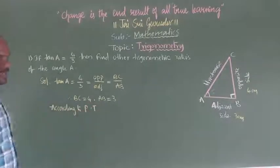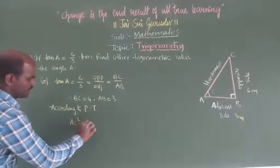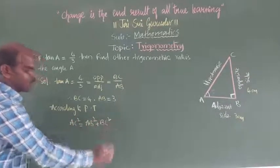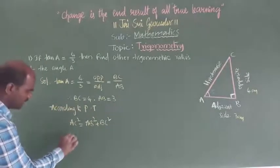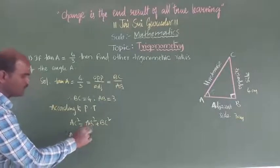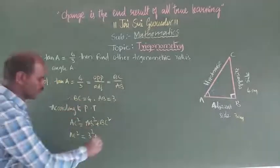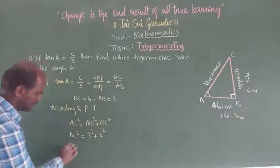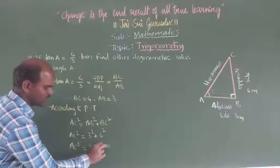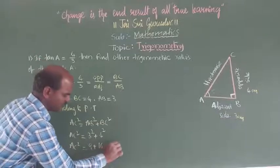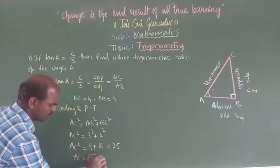According to Pythagorean theorem, AC square is equal to AB square plus BC square. AC value we don't know. AC square equals three square plus four square, which is 9 plus 16, equals 25. Therefore AC is equal to under root 25, which is 5. So AC value is 5 centimeters.